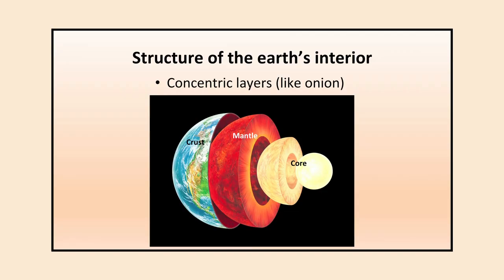The Earth's interior has different layers in the form of concentric layers. Concentric means there is one center and then rings around it — all circles share a single common center. For Earth also, there is one center and then different layers one after the other in a concentric ring form, just like an onion.